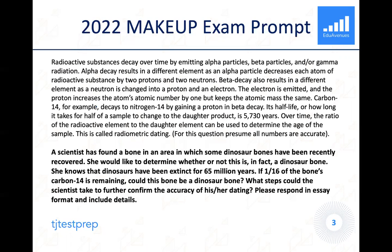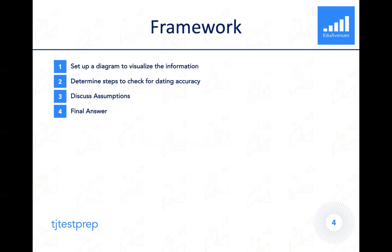The question that appeared on the 2022 makeup exam is shown on the slide. Please pause the video now to first read the entire prompt and try to solve the problem before we go over it together. Before we solve this problem, we can begin by creating a framework. Step one is to set up a diagram to visualize the information. Step two, determine the steps to check for dating accuracy. Third, we're going to discuss the underlying assumptions. And finally, we'll draw all of our final conclusions and clearly state what our final answer is.